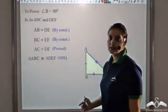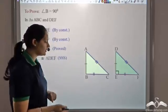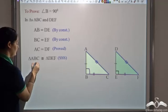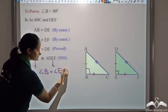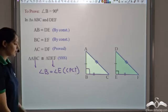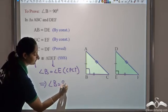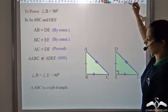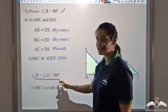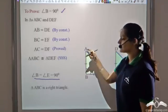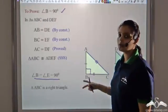Since the two triangles are congruent, all corresponding angles are equal. Therefore angle B = angle E by CPCT. Since angle E = 90°, angle B = 90°. Therefore triangle ABC is a right angle triangle. This proves the converse: if AB² + BC² = AC², then the triangle is always a right triangle.